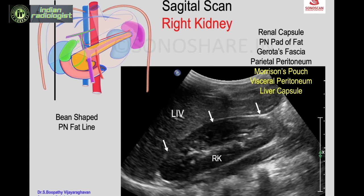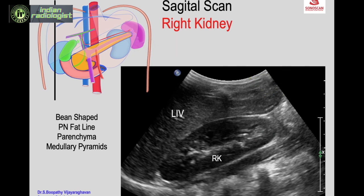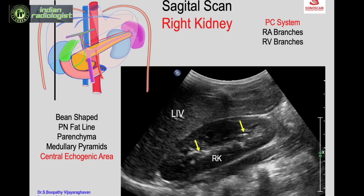Within this thin perinephric fat line you see the parenchyma, which is uniform in thickness all around, the medullary pyramids within the parenchyma, and then the central echogenic area. The central echogenic area, as the name implies, is the echogenic area in the center of the kidney. It contains the pelvicalyceal system, renal artery branches, renal vein branches, lymphatics, and sinus fat. Because of the interfaces between each of them, it appears echogenic.